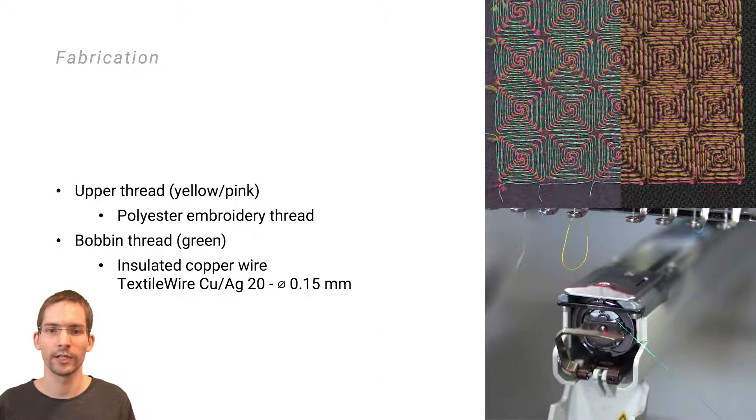Each sensor is fabricated with a polyester embroidery yarn as upper thread and textile wire as bobbin thread. This configuration is chosen to minimize stress on the enameled copper wire during the embroidery process and thus preventing wire breaks.